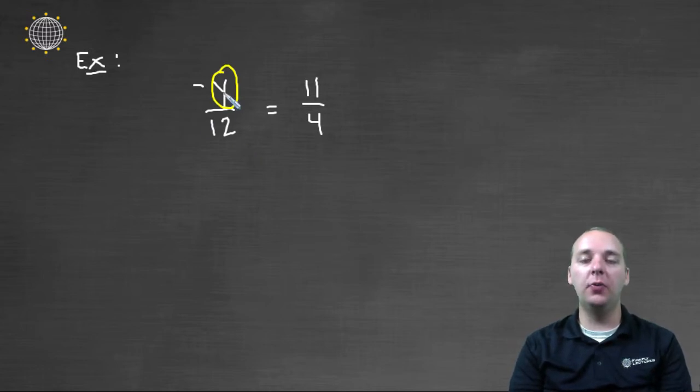And we'll have to find the right number such that negative y over twelve, that ratio will be equivalent to the ratio of eleven over four. Now in the last video we explained that usually the easiest way to solve proportions is to use something called cross multiplication. That means you can take the numerator from the left ratio and multiply it times the denominator of the right ratio.